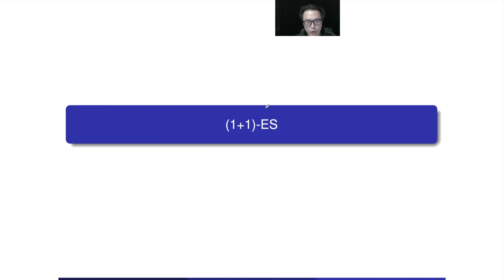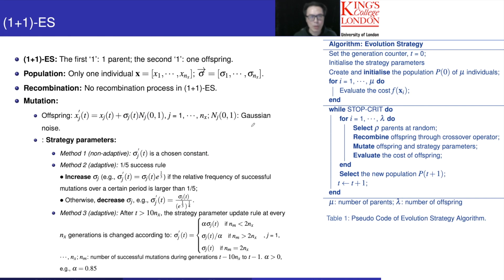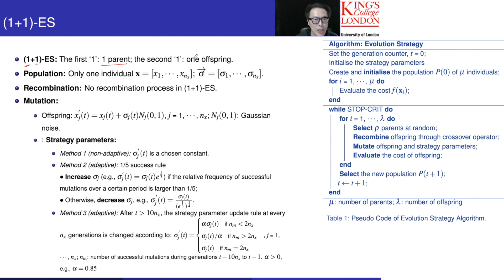Now I'm going to talk about the first version of ES, the evolution strategy. We call this the 1 plus 1 ES. We are going to understand what does it mean by 1 plus 1. The first one means that we only have one parent, so the population size is 1. The second one means that each iteration, we are going to generate one offspring.